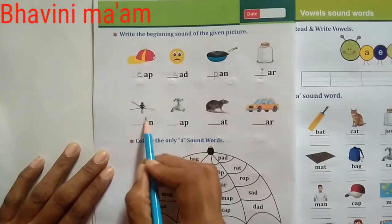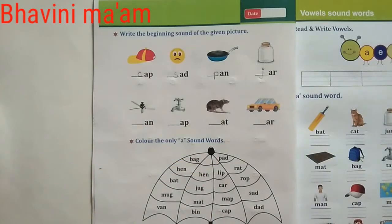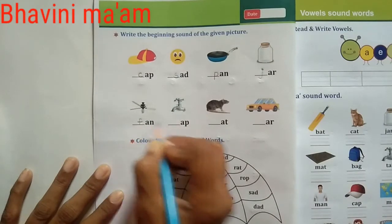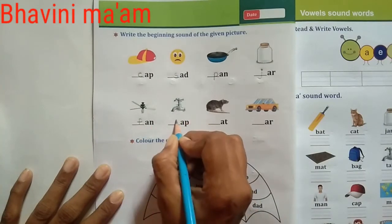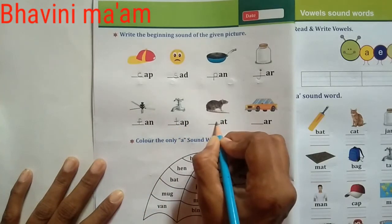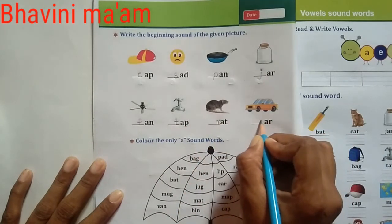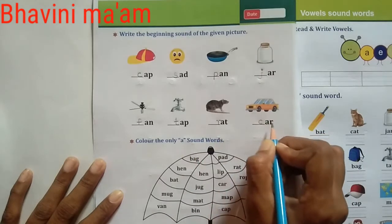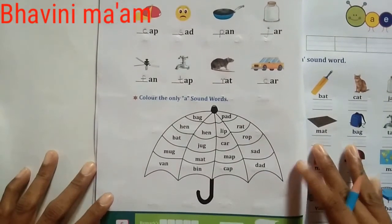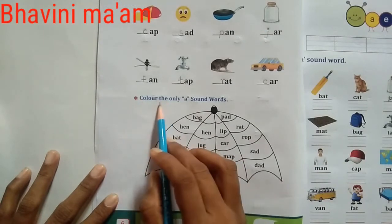Next line: which picture is this? Fan — the teacher practiced this before. Fan means F-A-N, fan. This picture? Tap — T-A-P, tap. This: rat — R-A-T, rat. And this: car — C-A-R, car. This topic is now complete.